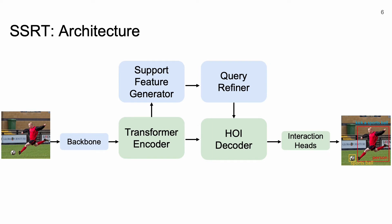Query refiner refines the learnable queries using the support features. Finally, a HOI decoder along with interaction heads use these refined queries to make the HOI predictions. Now, we will look into the details of our network.